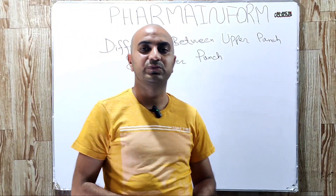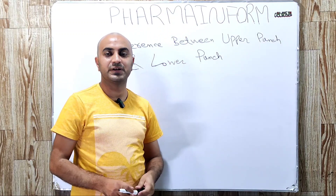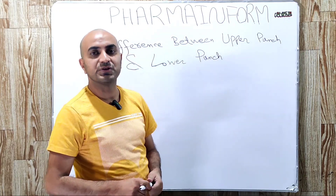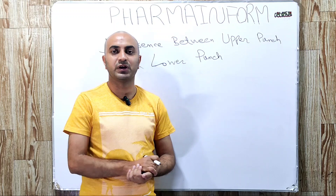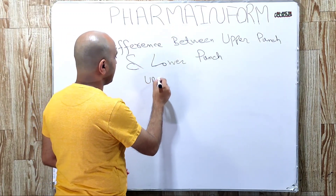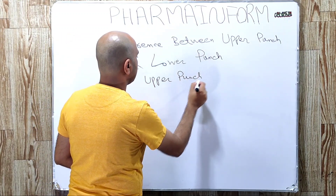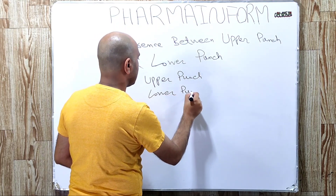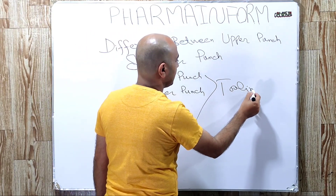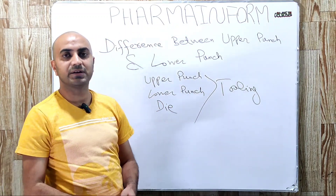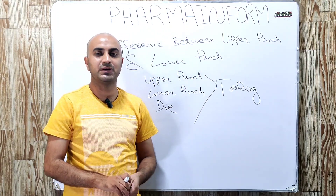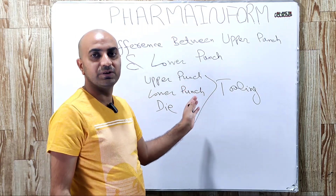Assalamu alaikum, I am Sajad and you are watching my YouTube channel Farm and Form. Today we will discuss the difference between upper punch and lower punch of the compression machine. As you know, compression machine tooling consists of three components: one is upper punch, second is lower punch, and third one is die. These three are known as the tooling of the compression machine, and the tablet shape and dimension are dependent on the tooling of the compression machine.